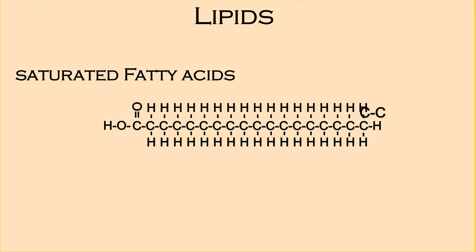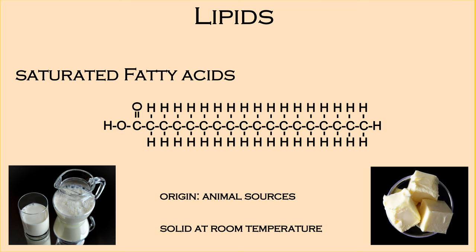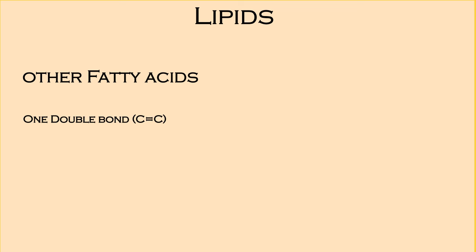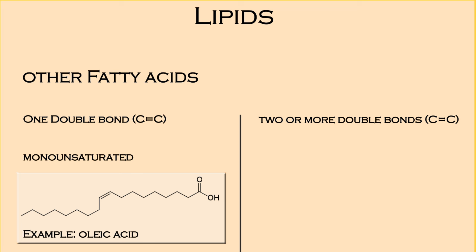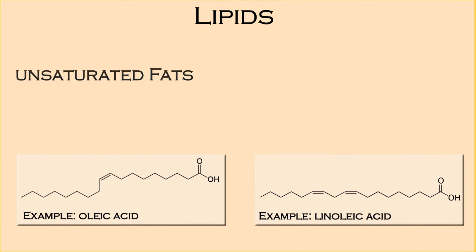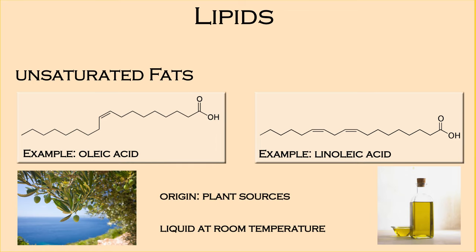Saturated fatty acids have single bonds between the carbon atoms. They originate from animal sources and are solid at room temperature. Other fatty acids don't bind their maximum number of hydrogens due to double bonding between carbon atoms in the chain. Fatty acids with one double bond are monounsaturated, while those with two or more double bonds are polyunsaturated fatty acids. Unsaturated fats originate from plants and are liquid at room temperature.